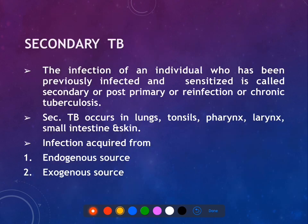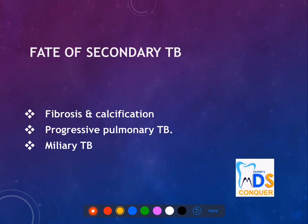In secondary tuberculosis, the individual is previously infected or sensitized. Secondary tuberculosis can be seen in organs like the tongue, lungs, tonsils, pharynx, and small intestine. The infection may be of endogenous or exogenous source. The fate may be fibrosis, calcification, progressive pulmonary tuberculosis, or miliary tuberculosis with multi-organ involvement.